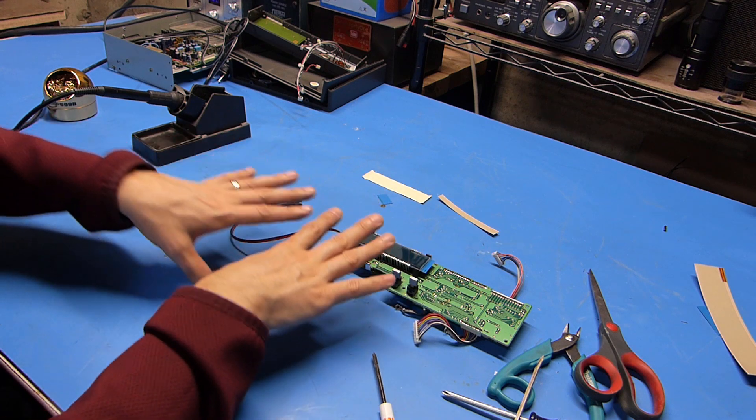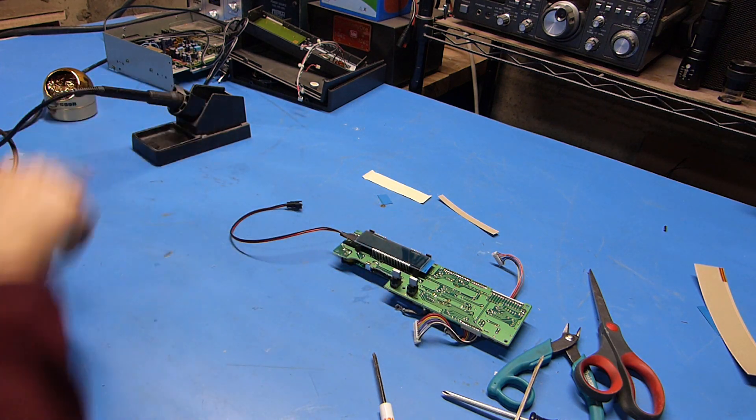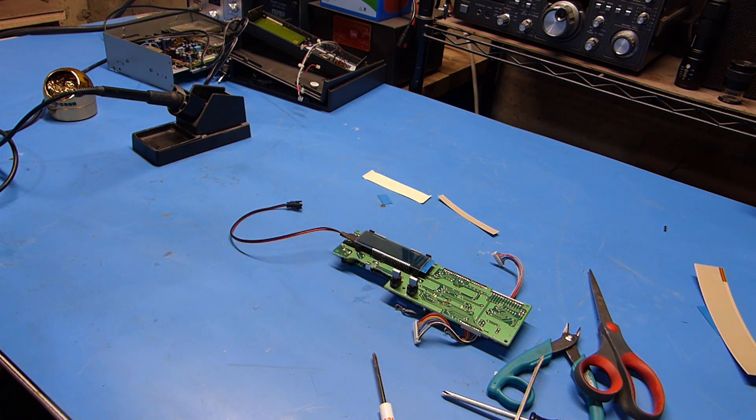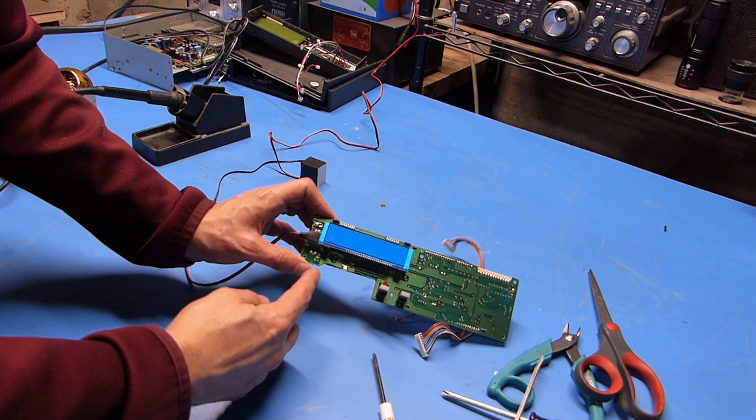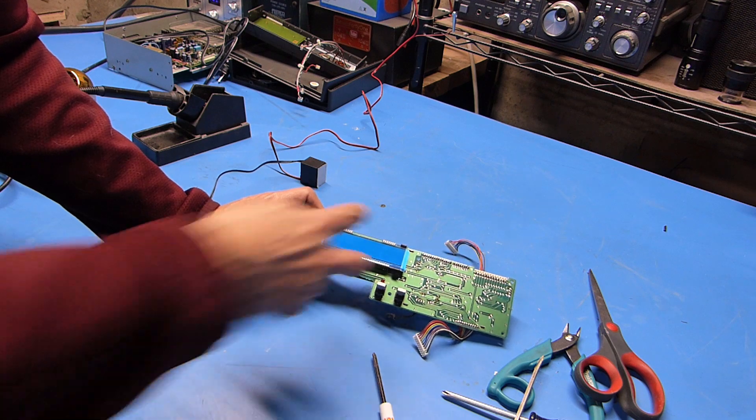Now before I cut this wire and start trying to solder this back into the board I'm going to hook it back up to the supplied inverter and make sure it still works. Okay so there you go. It looks like it still works so cutting it didn't damage it at all.